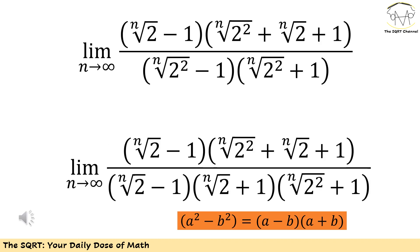Before moving forward, I'm going to simplify the denominator a little bit further to be able to remove the nth root of 2 minus 1 from top and bottom. Let's reuse the identity and rewrite the nth root of 4 minus 1 as the nth root of 2 minus 1 times the nth root of 2 plus 1.